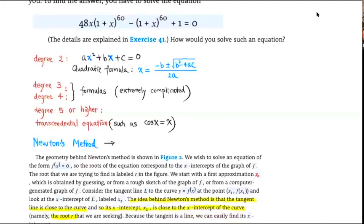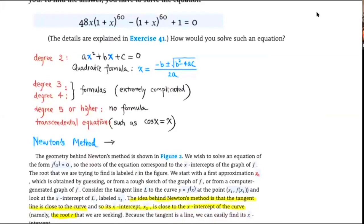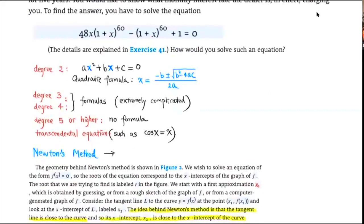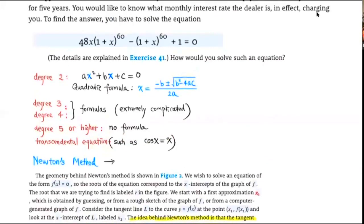For equations of degree 5 or higher, it is proven that there are no formulas to solve them. So this equation here is of degree 60, so certainly we don't have a formula to solve it. Also, for transcendental equations — ones that mix trig functions with polynomial functions — we don't have a formula to solve them either. So how do we deal with a complicated equation like this?